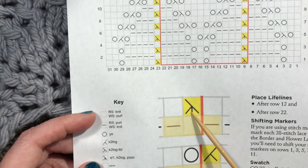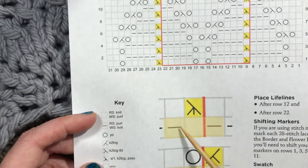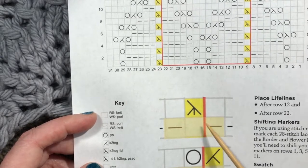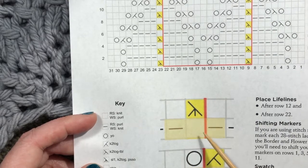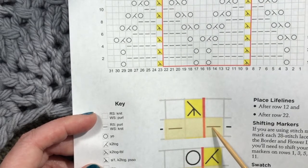And what are those three stitches? These three stitches become the decrease and those lines are kind of pointing at them. So this is slip one, knit two together, pass the slip stitch over. So this is the stitch we're going to slip. You have to take the marker off.